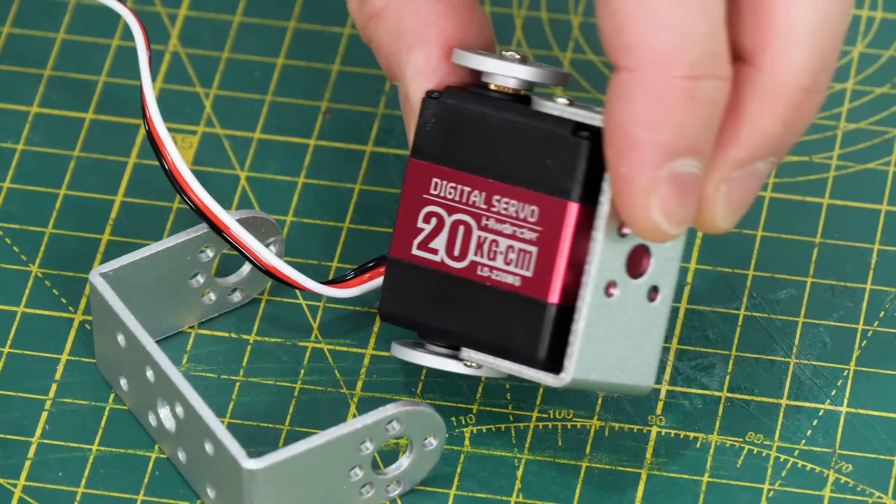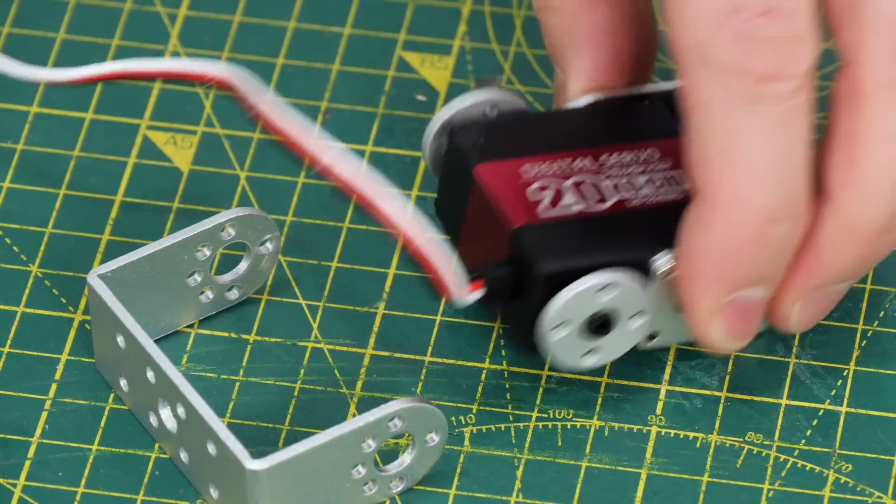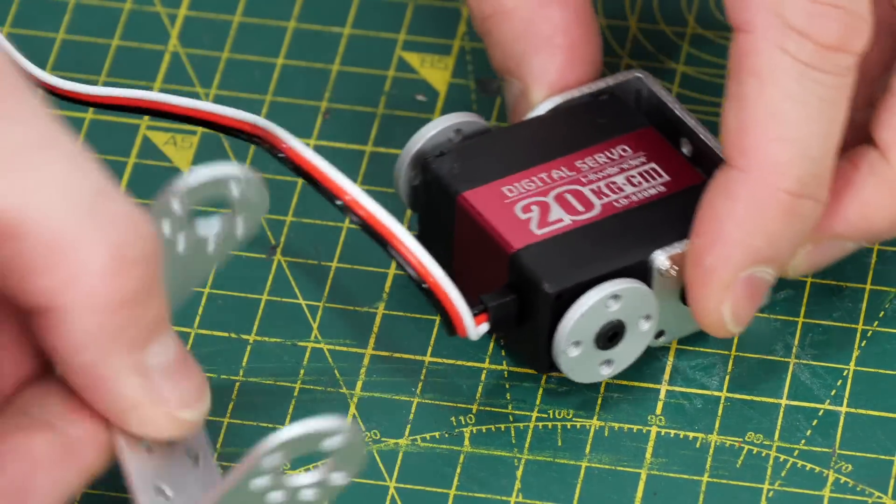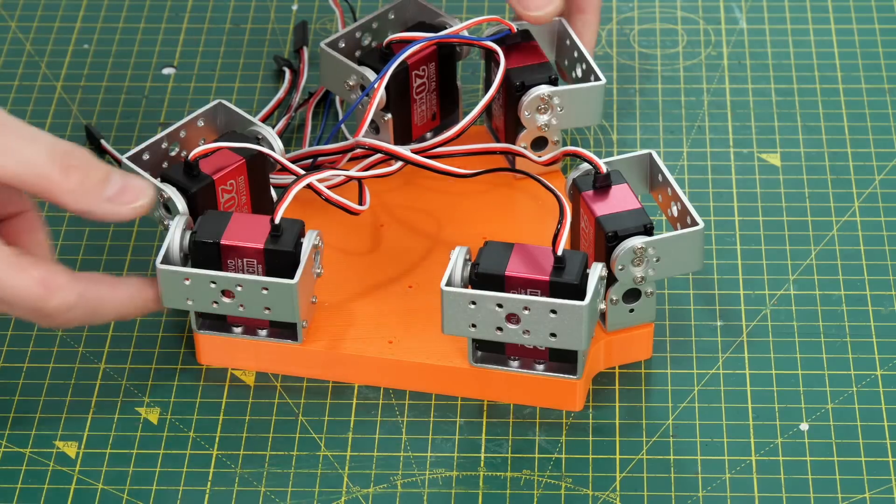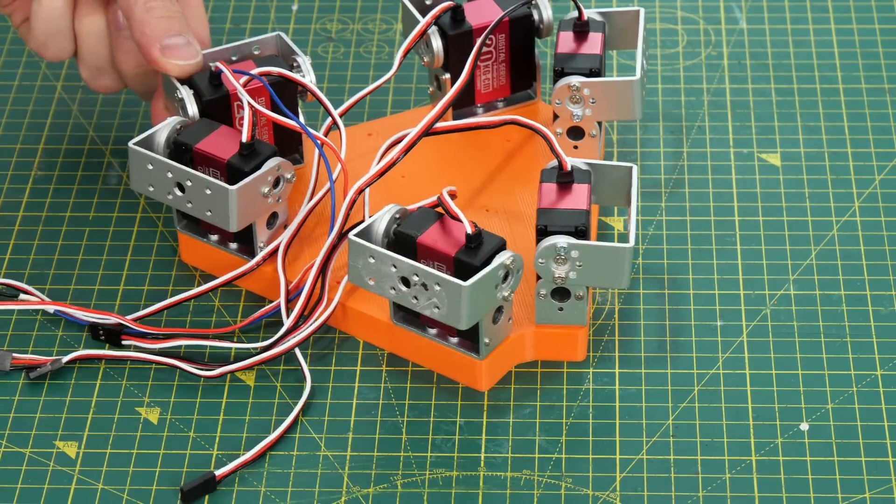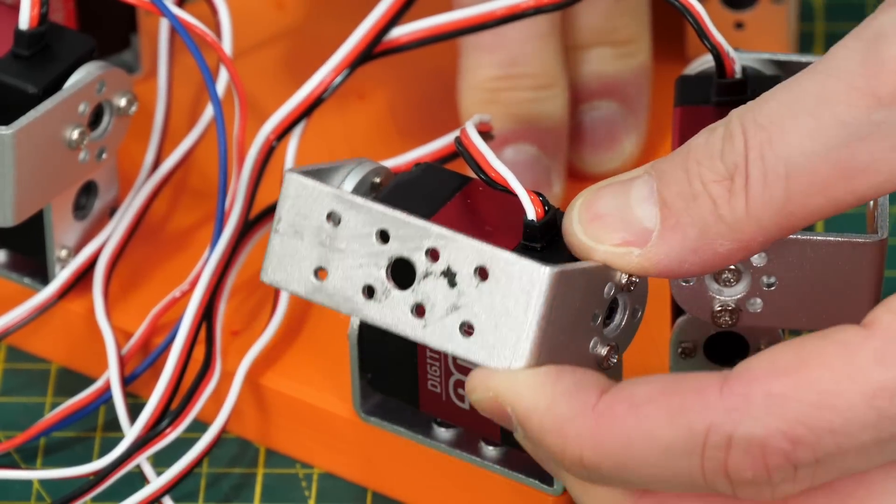I'm just using some standard RC style servos, these are 20kg torque servos with metal brackets for building robotics assemblies. I've mounted six of those on the base, all on their ends with the output levers facing outwards so I can get them nice and close together.